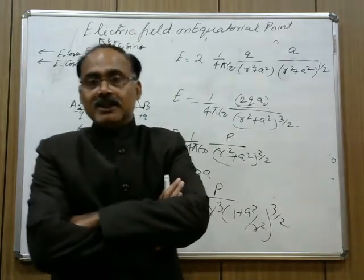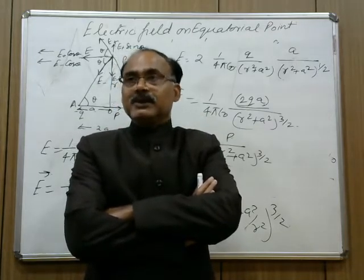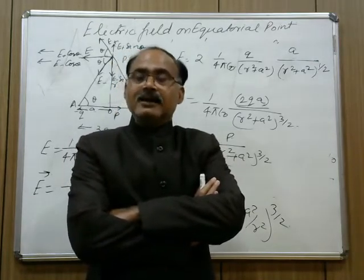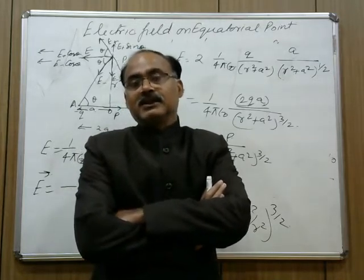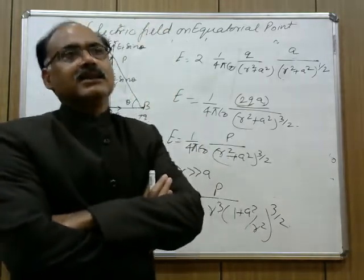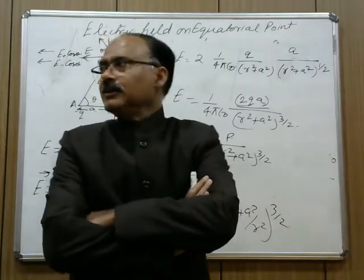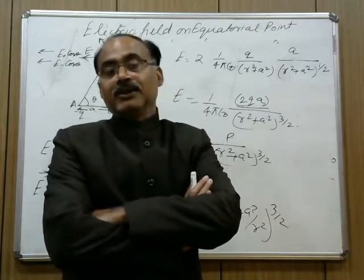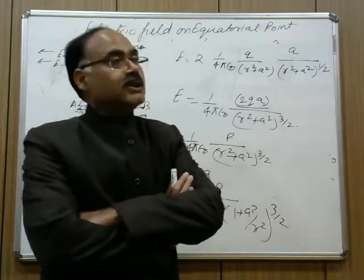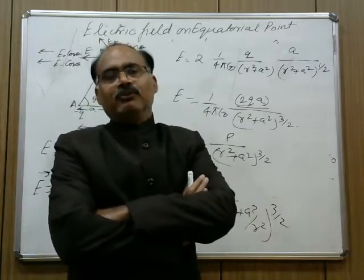Now comes the ideal electric dipole. An ideal electric dipole is one whose charge magnitude tends to infinity and the separation between the two charges tends to zero. The condition is: the magnitude of the charges should be maximum (tending to infinity) and the separation between the charges should be minimum (tending to zero). This was all about the electric dipole and the electric field due to an electric dipole.